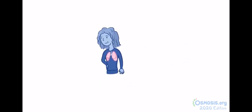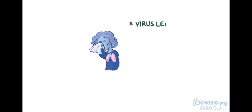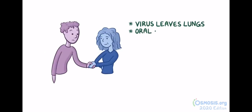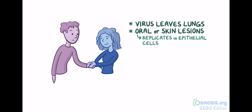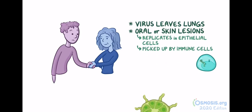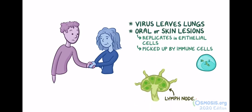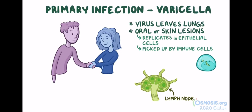When an infected person sneezes or coughs, the viruses leave the lungs and get released into the air. The virus can also be transmitted through contact with the oral or skin lesions of the infected person. When the virus comes into contact with the respiratory mucosa or the skin of a new person, it starts replicating in the epithelial cells. It soon gets picked up by nearby immune cells and transported to a nearby lymph node. The virus now causes primary infection called varicella, or chickenpox.